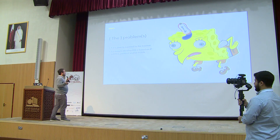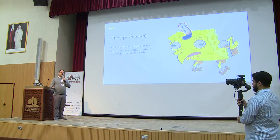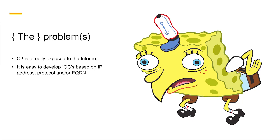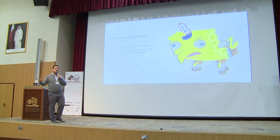The problems here are that your C2 is directly exposed to the internet, and it's easy to develop IOCs because you have one source address. It can be blocked on the firewall, or the vendor can develop threat intelligence based on the IP, communication protocol, and so on.